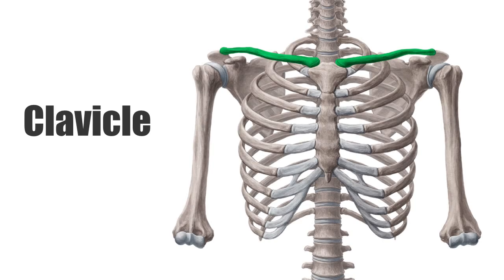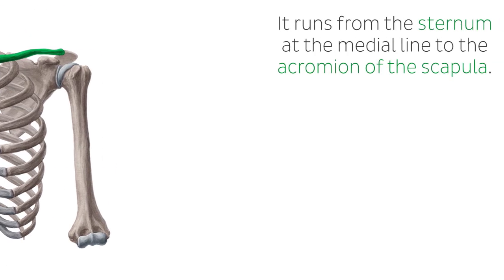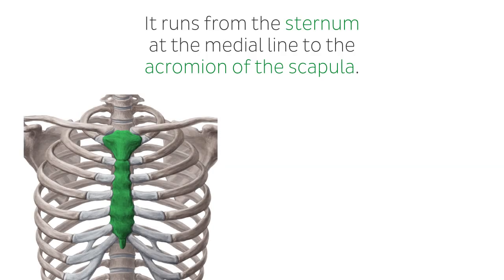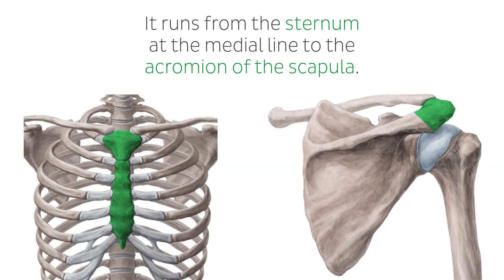The clavicle, or collarbone as it is often called, is a curvy bone located at the base of the neck. It is classified as a long bone, but it is actually relatively short. It runs from the sternum at the medial line to the acromion of the scapula, and there is one on each side of the sternum.